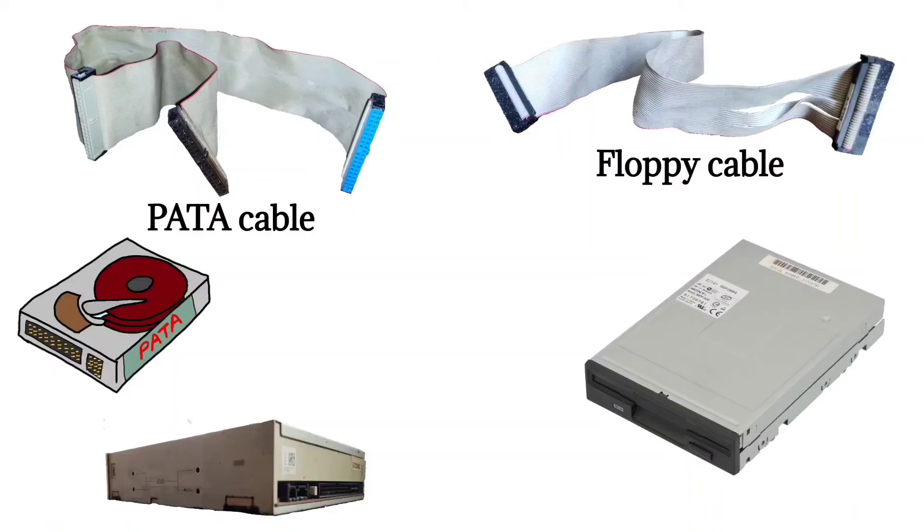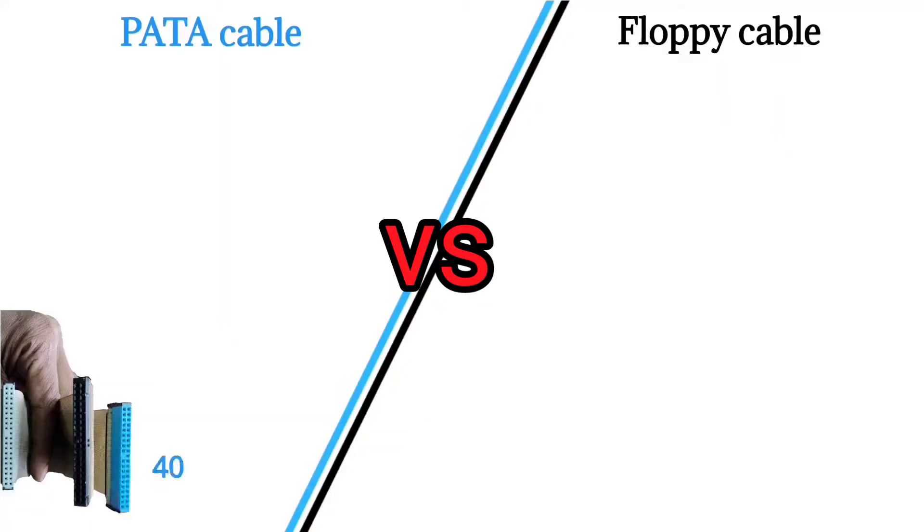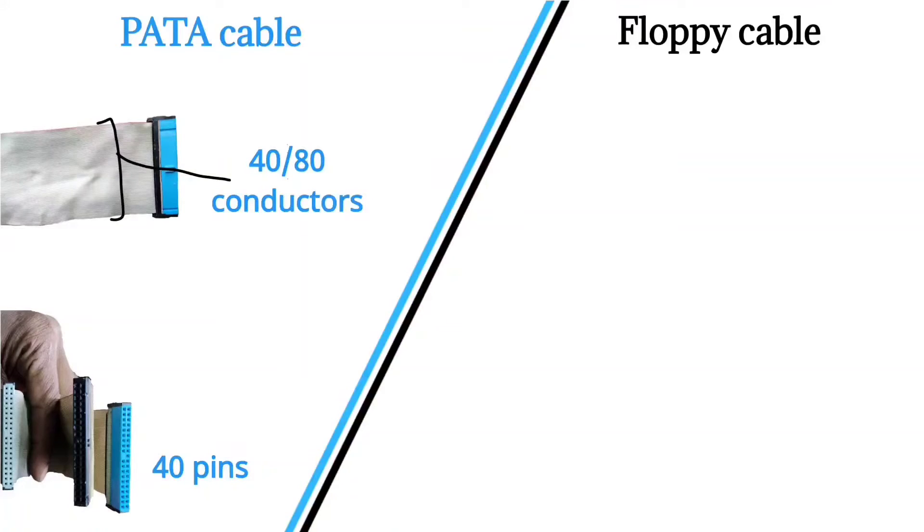That looked a lot like a PATA cable. Now let's see what are the differences between them. PATA cable has a total of 40 pins in its connector and 40 or 80 conductors in its ribbon cable, but floppy cable has only 34 pins in its connector and 34 conductors in its ribbon cable.